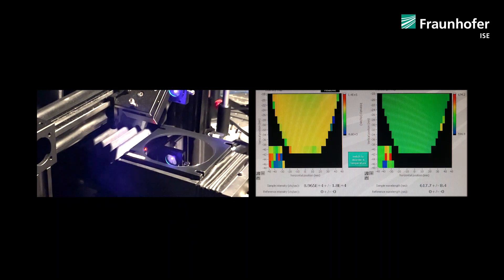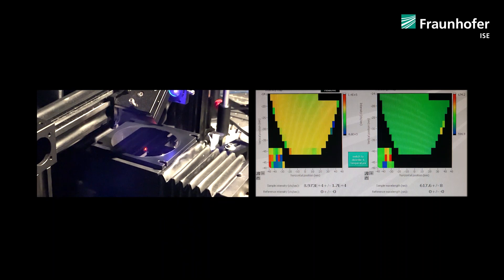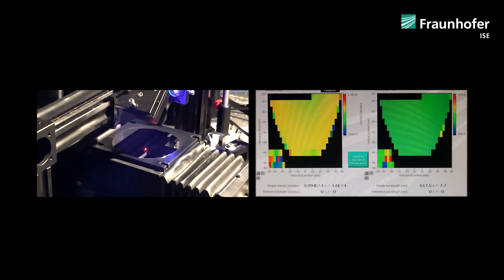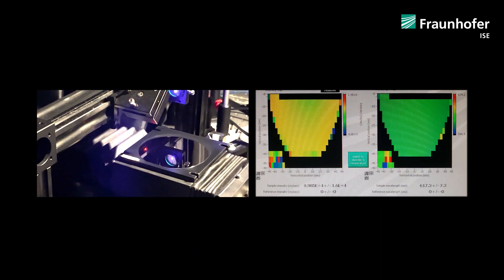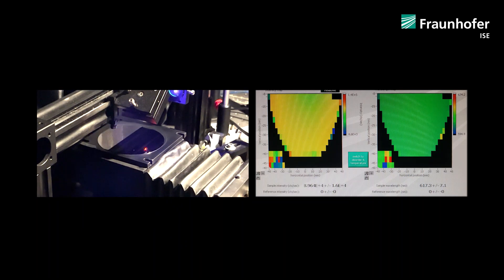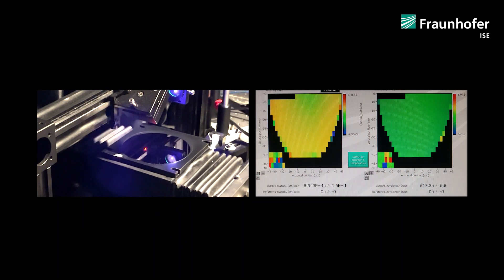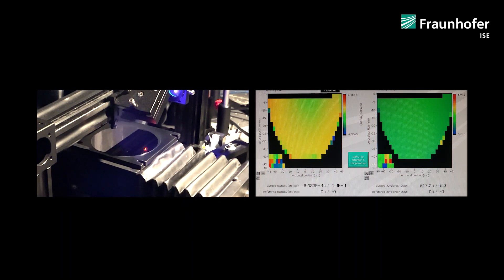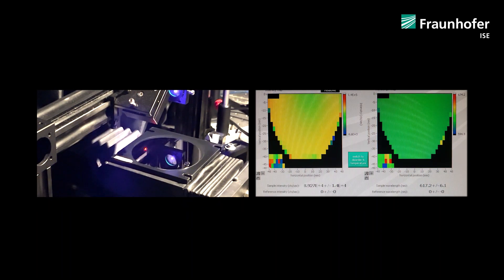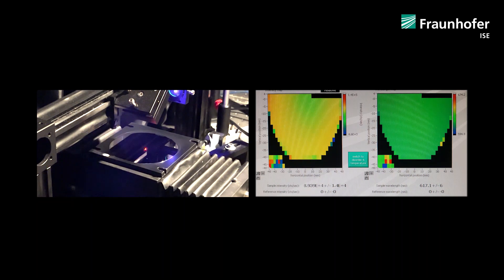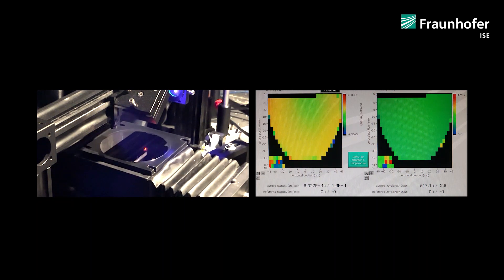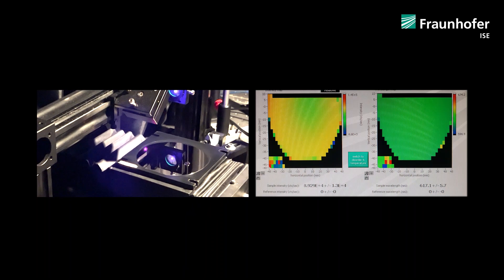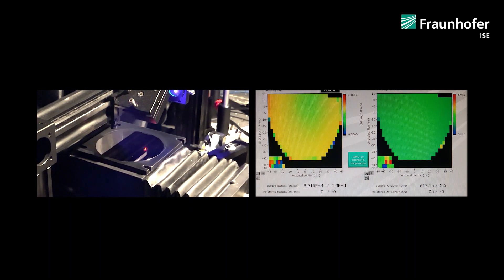Currently we are measuring the absorber material of our top cell, aluminium-gallium-phosphate, which has the highest band gap of all absorbers in the multi-junction solar cell. And thus it emits visible red light while all other absorbers emit infrared light. When the focused laser beam hits the sample one can see the red photoluminescence from the sample while next to the sample one sees the blue laser light which is scattered.